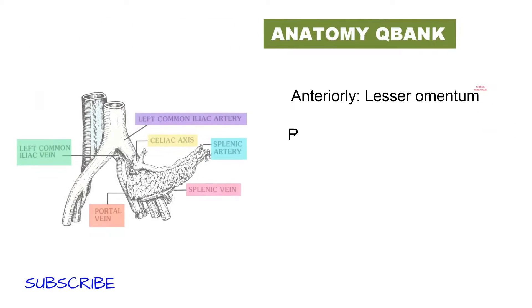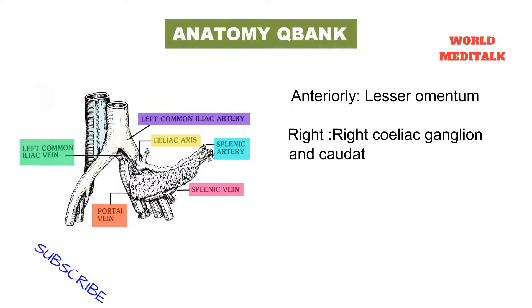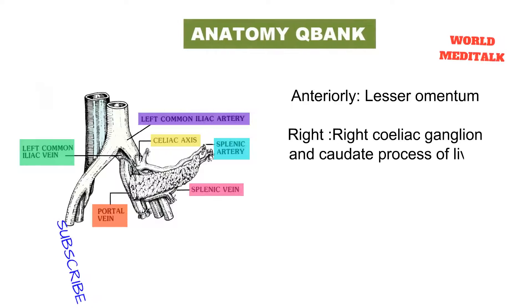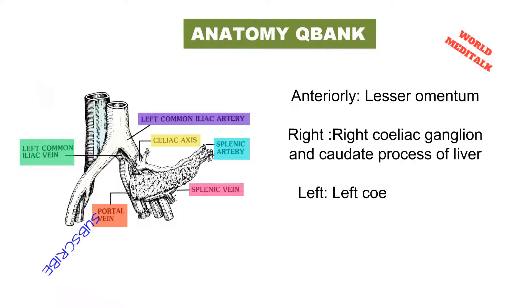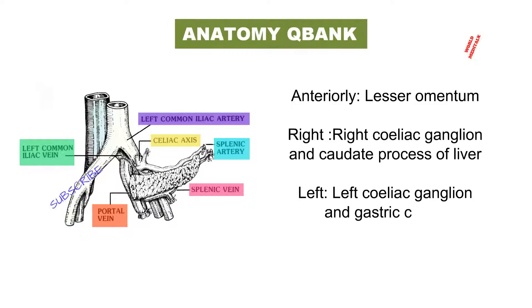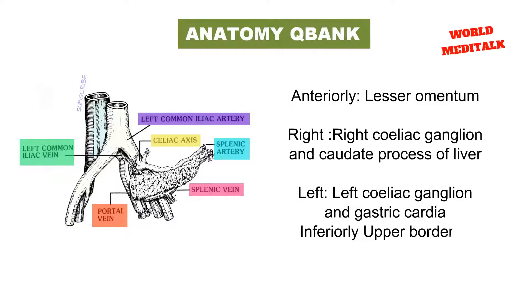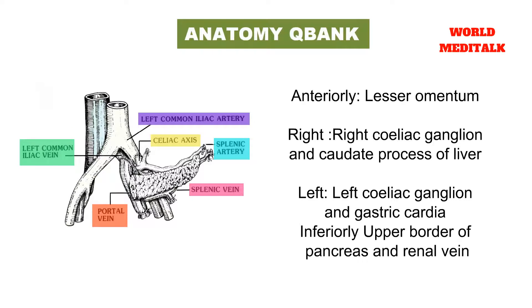Anteriorly, the celiac axis is related to the lesser omentum on the right side, the right celiac ganglia, and the caudate process of the liver. On the left side: the left celiac ganglia and the gastric cardia. Inferiorly lies the upper border of the pancreas and the renal vein.